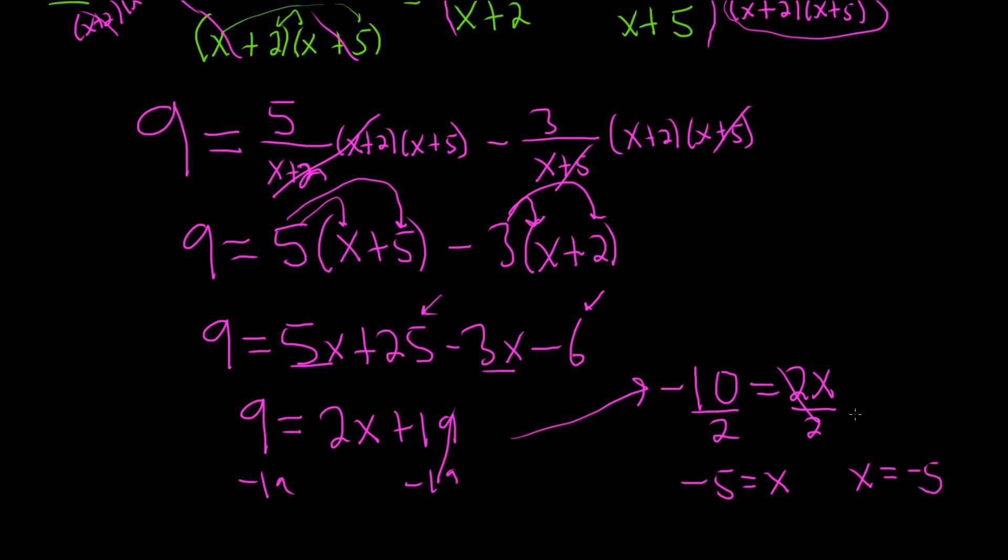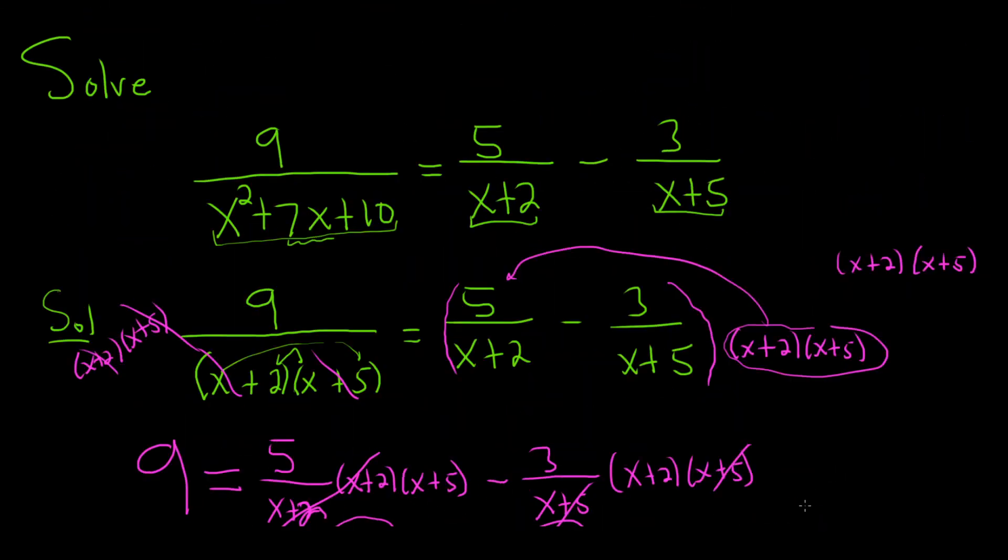And whenever you have problems like this, you're supposed to go back and check. Whenever you have these fractions in the problems, you want to make sure you can plug your negative 5 back into the original. And as you can see here, you can't. If you were to put a negative 5 here, you would get negative 3 over 5 plus negative 5. So you would get negative 3 over 0.